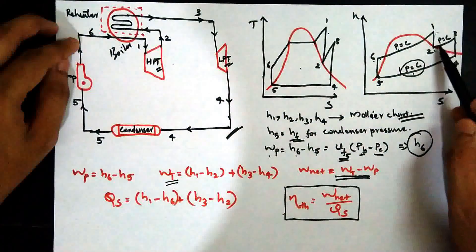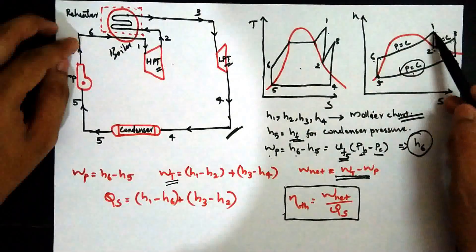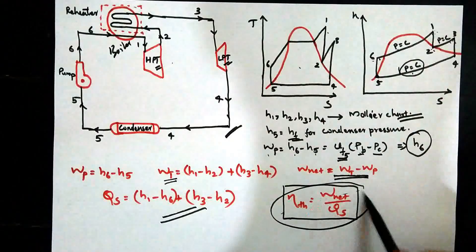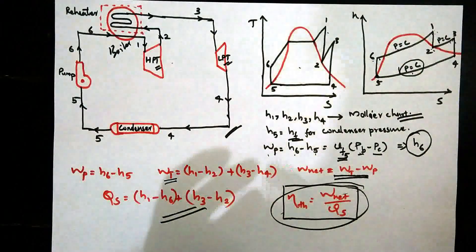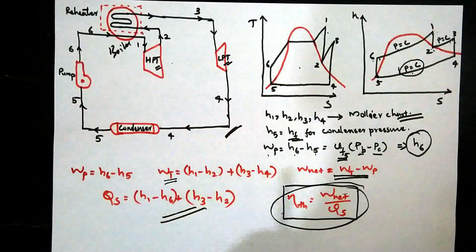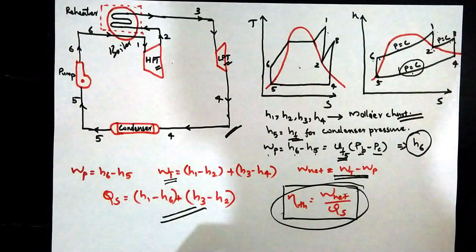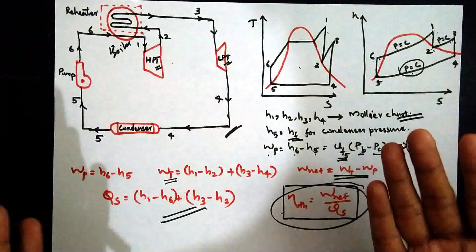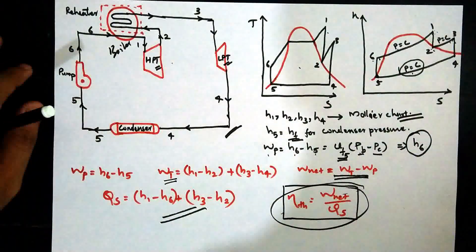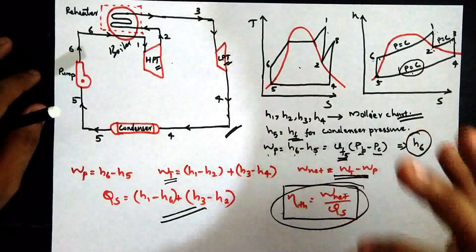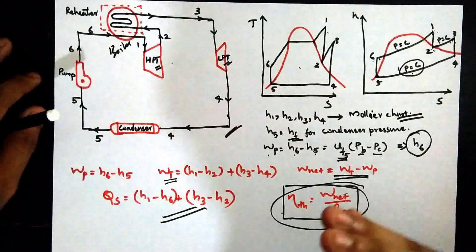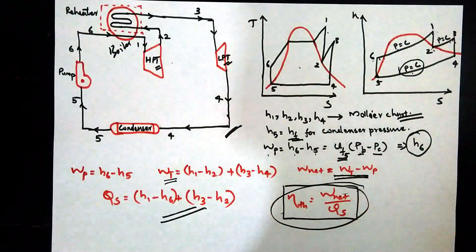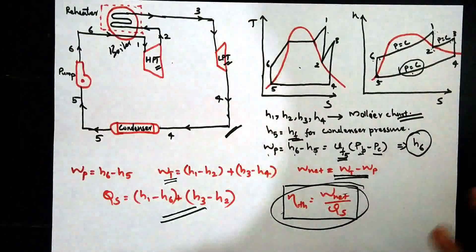The heat supplied in the reheat cycle has two components: heat supplied from 6 to 1 in the boiler, and heat supplied from 2 to 3 in the reheater. So the total heat supplied equals (H1 minus H6) plus (H3 minus H2). The thermal efficiency equals W-net divided by heat supplied. As we can see, with reheat, the W-net work output is higher, which increases the thermal efficiency. Also, the dryness fraction is kept above 0.85, which protects the turbine blades from erosion and corrosion.